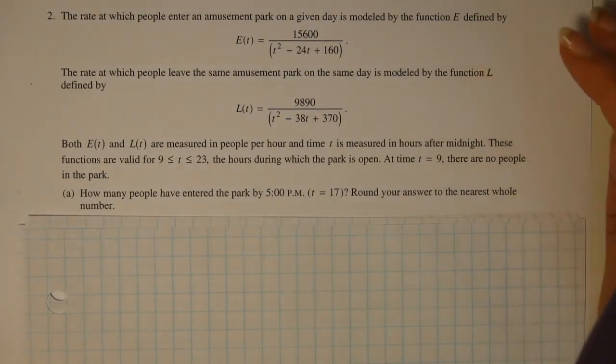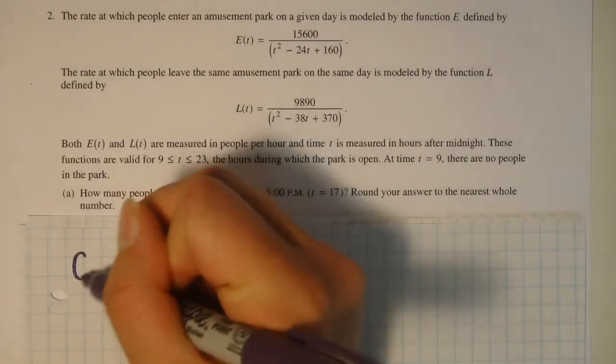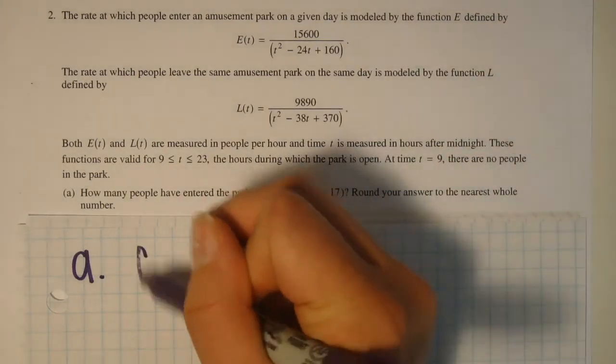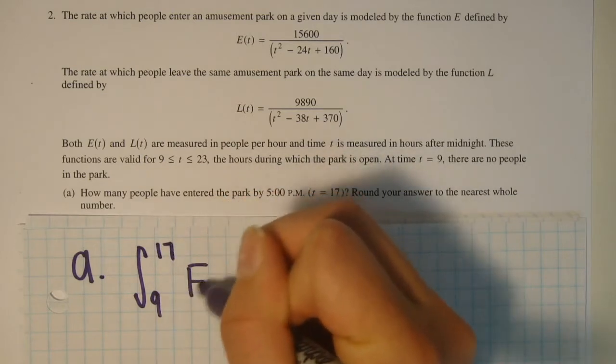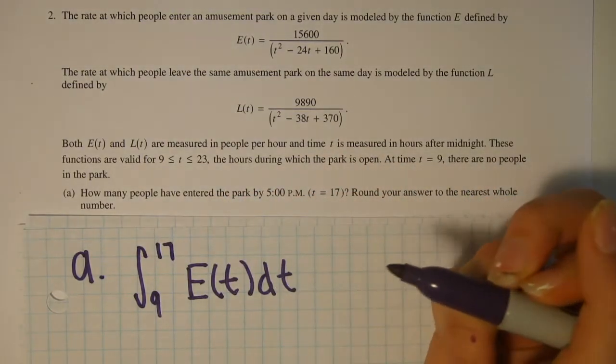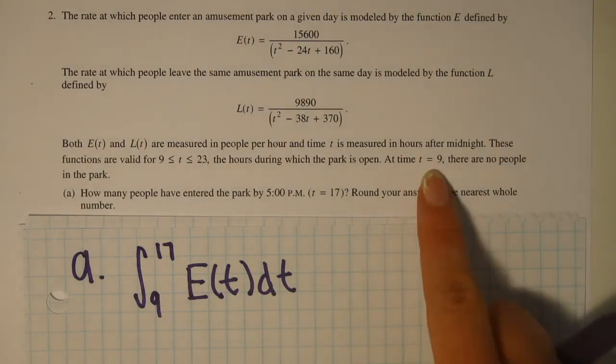Question A reads, how many people have entered the park by 5pm? Round your answer to the nearest whole number. So part A we will need to set up an integral. We will set up the integral from 9 to 17, E(t) dt. We know to set this integral up because the park opens at 9.